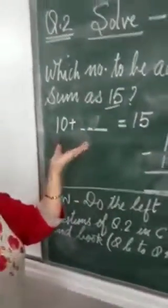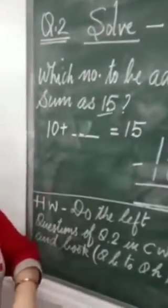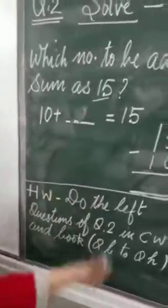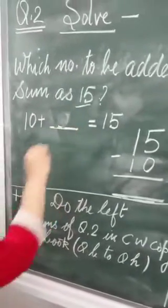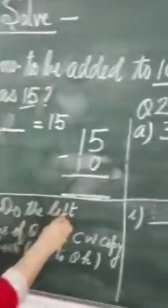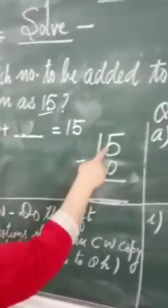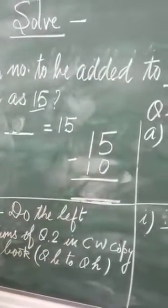I know, you are very smart, you will count on your fingers and say ma'am 5. Okay, but what is the correct way to find out? We need to subtract. We will subtract 10 from 15 to find out the answer.